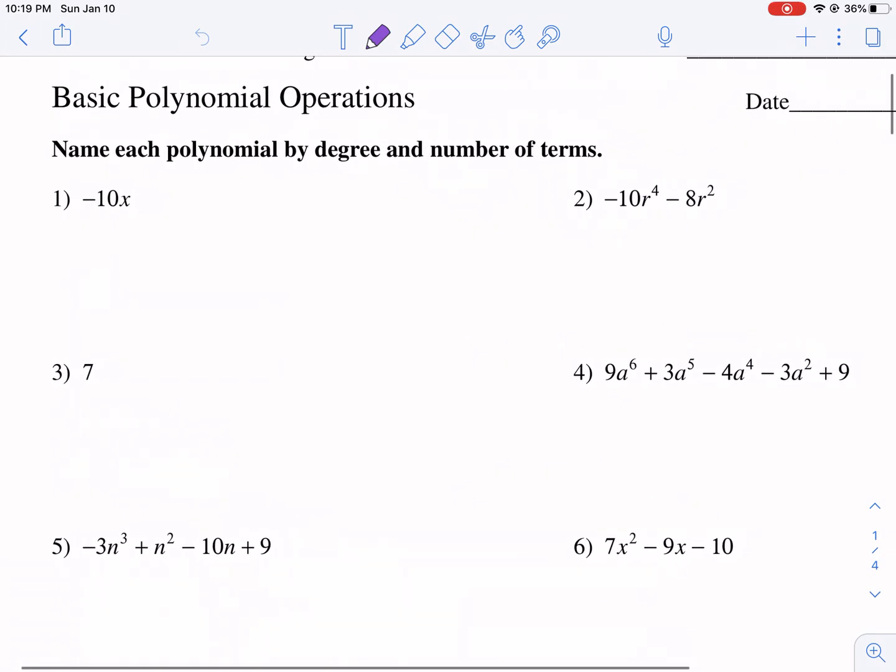The first prompt says name each polynomial by degree and number of terms. So we're just going to go through the examples as a way of explaining what degree is and what it means to have a certain number of terms. Both of these have specific names, but there's a lot of names for degree.